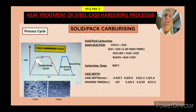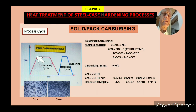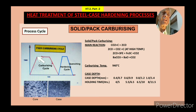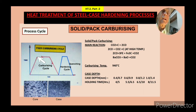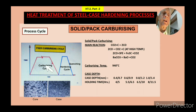The heat treatment cycle shows temperature on the vertical axis and time on the horizontal axis. The box is heated up to a temperature of around 940–960°C. After reaching that temperature, it is soaked for a longer time depending on the required case depth. There are then two process options: one is to directly quench from that temperature, and the other is to cool slowly first, then reheat to the soaking temperature, hold for some time, and then quench.